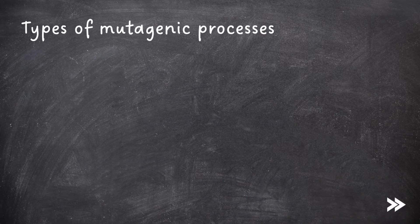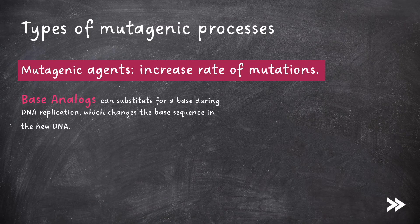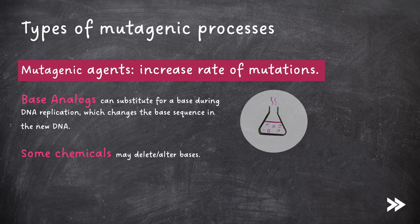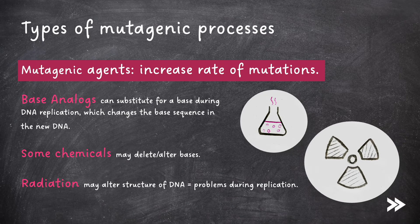We should know about different types of mutagenic processes. Mutagenic agents increase the rate of mutations. Base analogues can substitute for a base during DNA replication, which changes the base sequence in the new DNA. Some chemicals may delete or alter bases. Radiation may alter the structure of DNA, causing problems during DNA replication. Additional notes on mutagenic agents can be found in my video on topic 3.4.3, genetic diversity can arise as a result of mutation or during meiosis, which you can access by following the link top right.